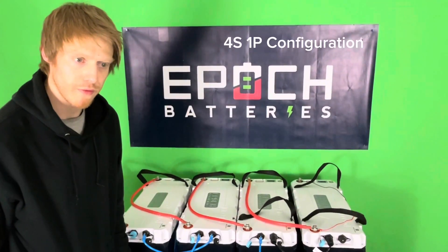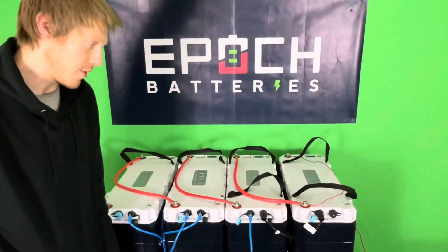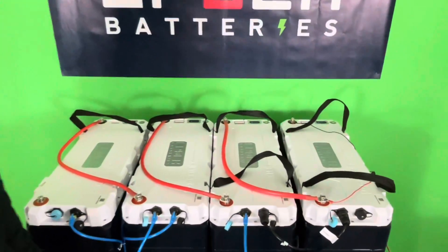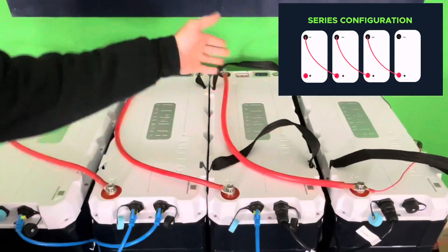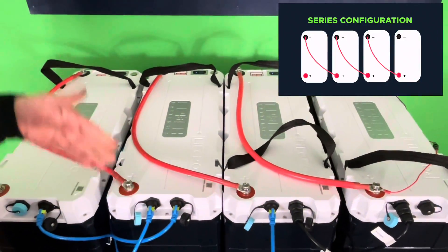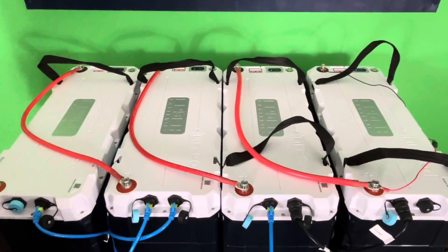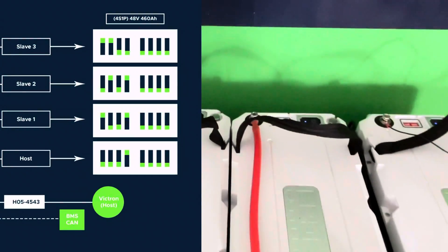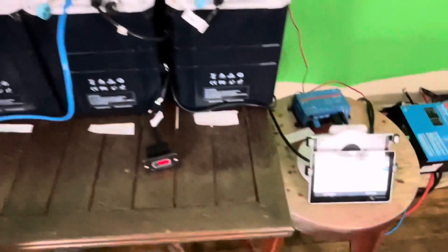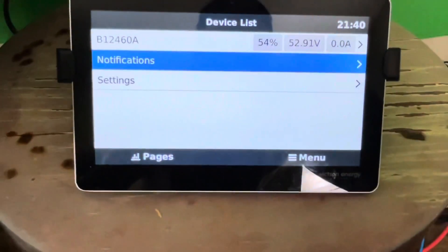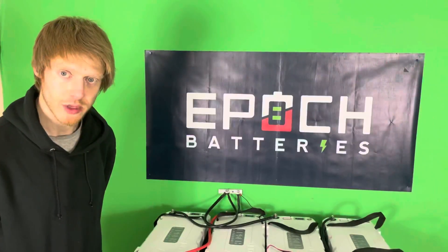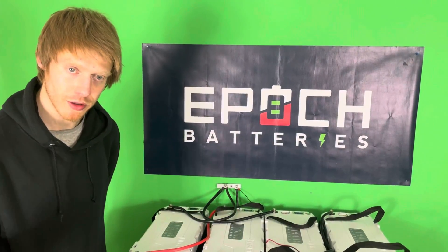Alright, so starting with the 4S1P configuration for a 48-volt 1260 amp-hour, we're going to go from positive to negative, positive to negative. And as we've shown you, the dip switch settings, we'll display them here on the Cerbo, and you can see that we have our 52.9 volts. So that's all for this configuration and now on to the next.